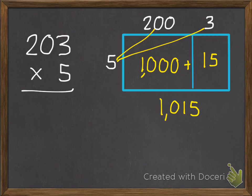If we're doing this standard, we just multiply our ones first still. 3 times 5 is 15. Multiply our tens. 5 times 0 is 0.